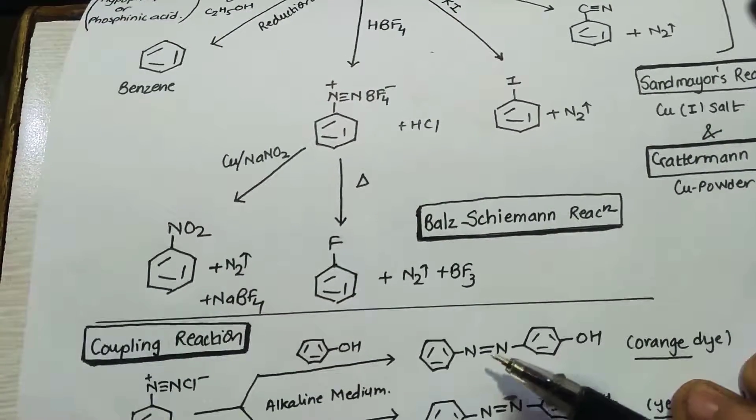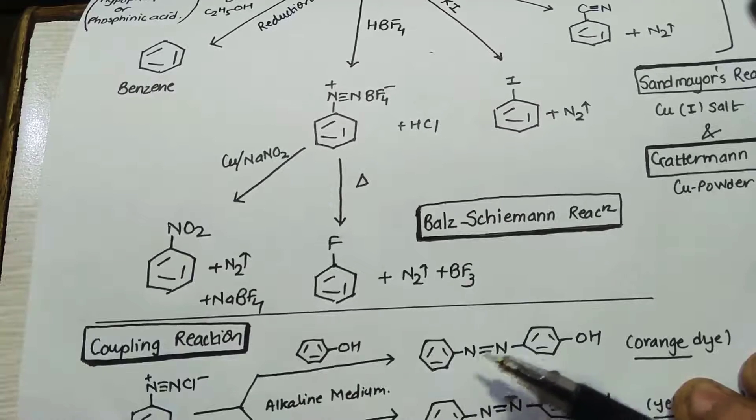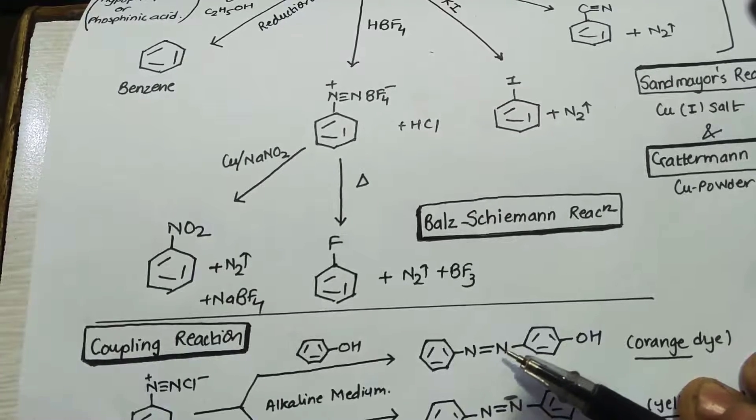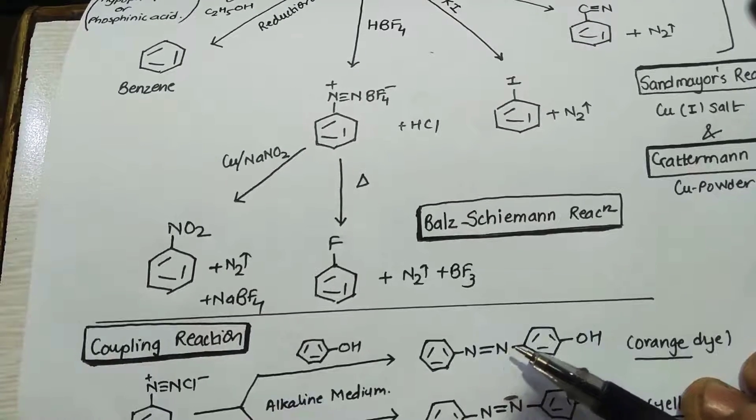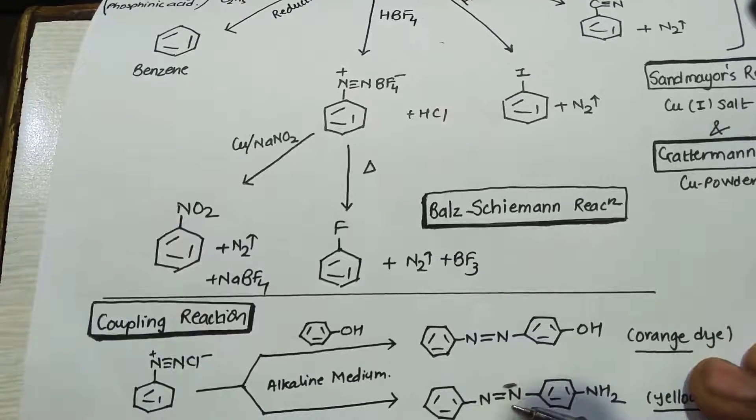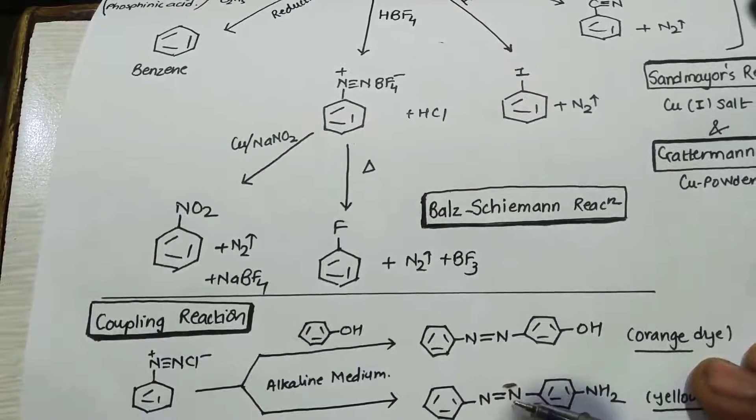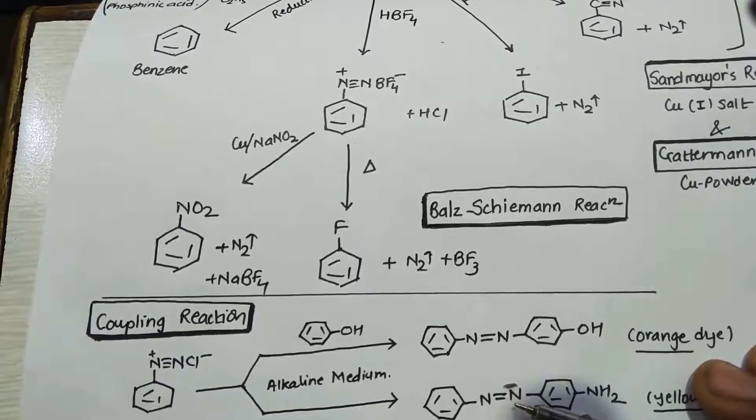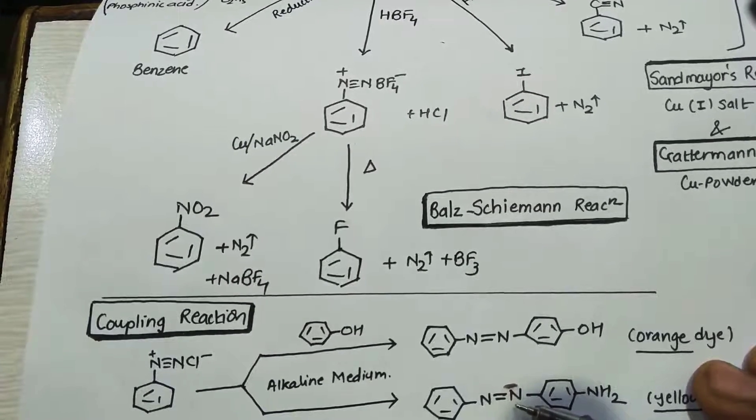Now in azo compounds, you have to remember that there will be N double bond N between two benzene rings. This is called an azo compound. So this is hydroxy azo benzene and this is amino azo benzene. Both are colorful dyes. So coupling reaction is used to make many colorful dyes. The coloring agents used in butter and other products are also made from coupling reactions.